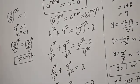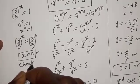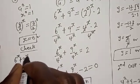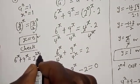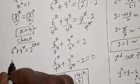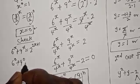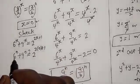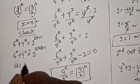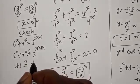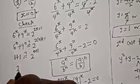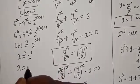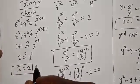Let's check our answer. Substituting s equals 0 into the original equation: 6 raised to power 0 plus 9 raised to power 0 equals 2 raised to power 2 times 0 plus 1. That gives 1 plus 1 equals 2 raised to power 1, so 2 equals 2, which satisfies the given equation. Therefore s equals 0 is confirmed.